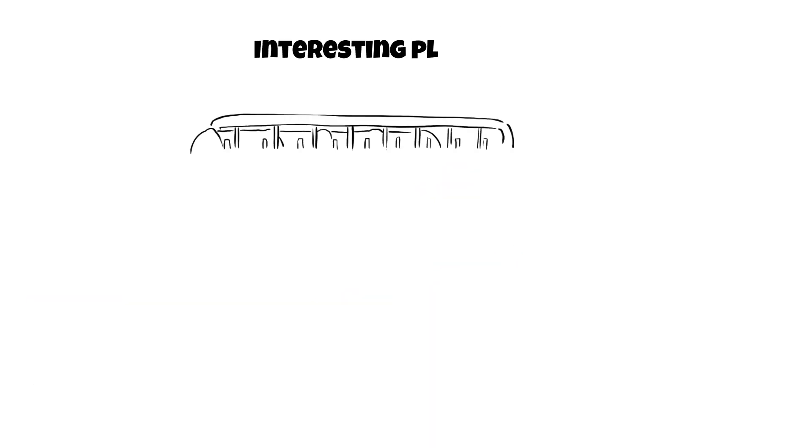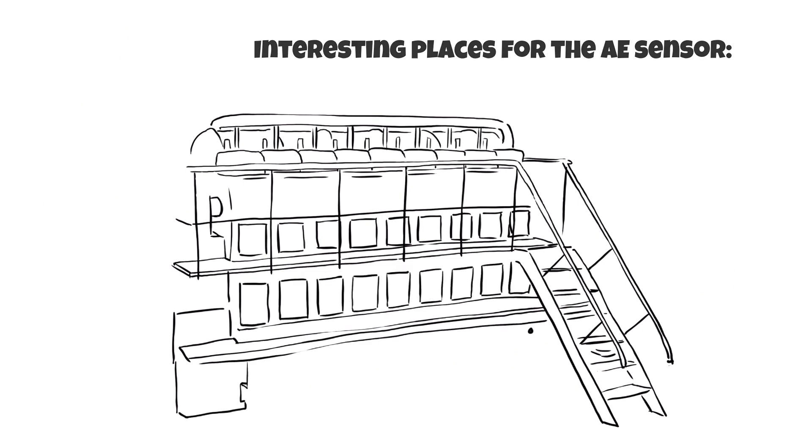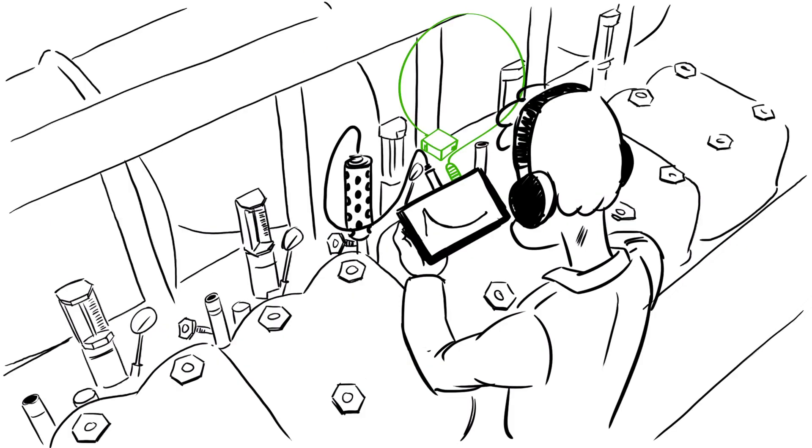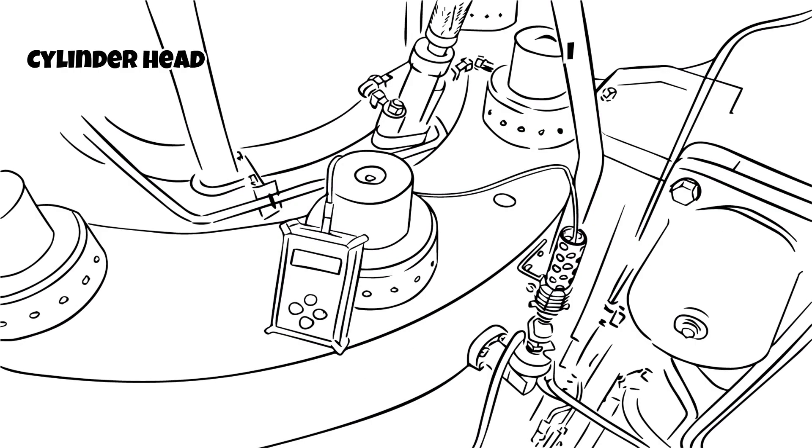Depending on the position the sensor is placed on, it can provide information about fuel pump activity, the injection process, and valve activity. On two-stroke engines, you can place the sensor on individual injection nozzles to check the quality of fuel atomization.